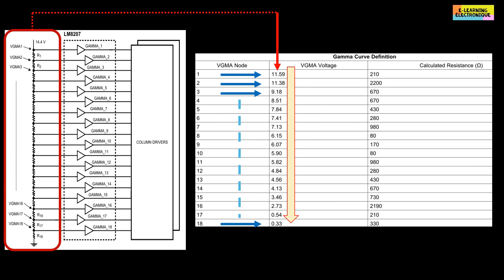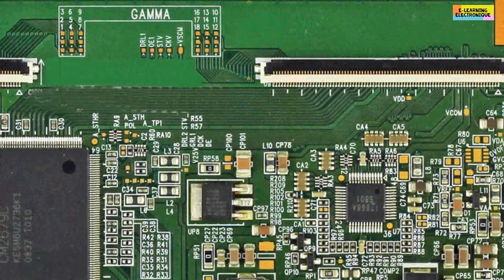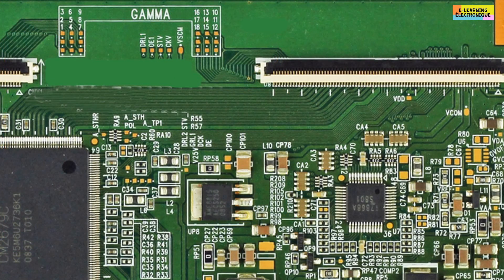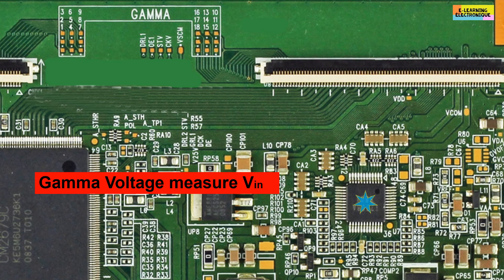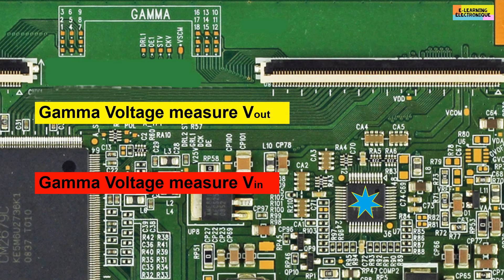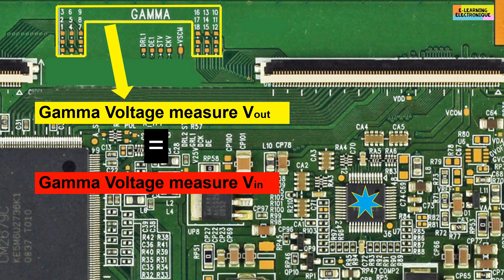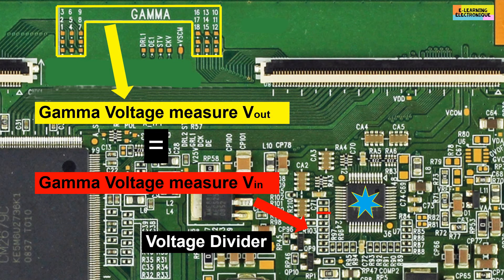In the case of non-programmable gamma chips, we must find the same voltage values at the input as at the output of the gamma chip because as we have seen the gamma chip only follows the voltage. If one or more abnormal values are found at the output, the input voltages must be checked directly on the resistors of the voltage divider. This will determine whether the anomaly is linked to a defective resistor in the voltage divider or whether it is the gamma chip that is defective.